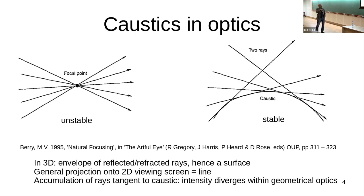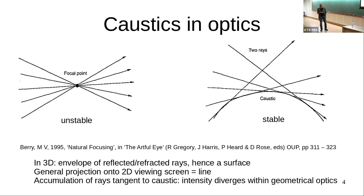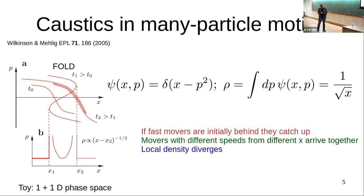In three dimensions, what you have is a surface forming the envelope of the refracted rays, and on a 2D viewing screen that will be a line — an accumulation of rays tangent to the caustic and a divergence of the intensity within geometrical optics. That's a caustic. A simple-minded way of seeing why you could get caustics happening in many-particle motion is to look at this example from the paper by Wilkinson and Malig.